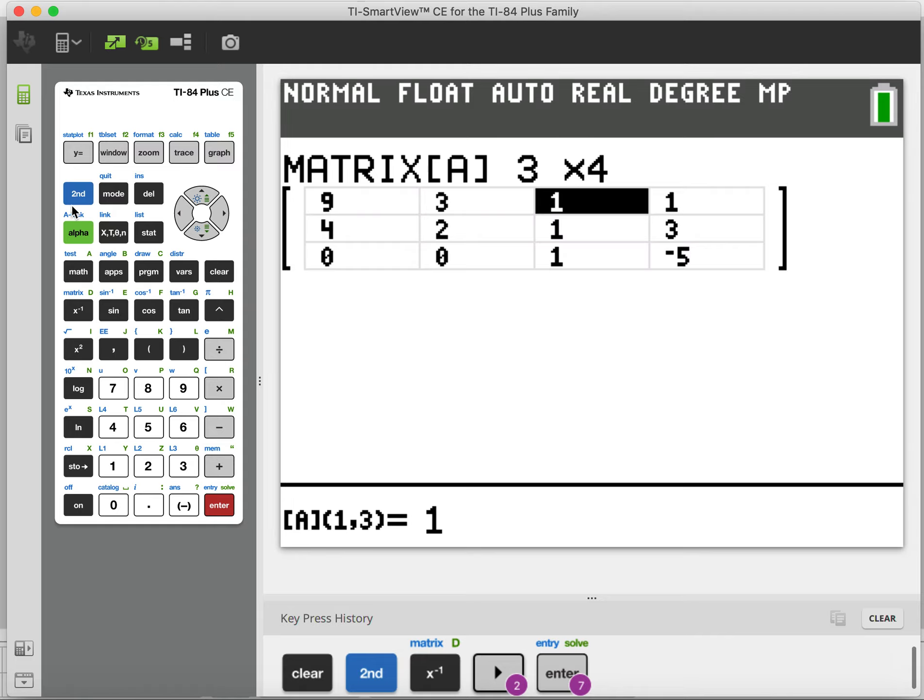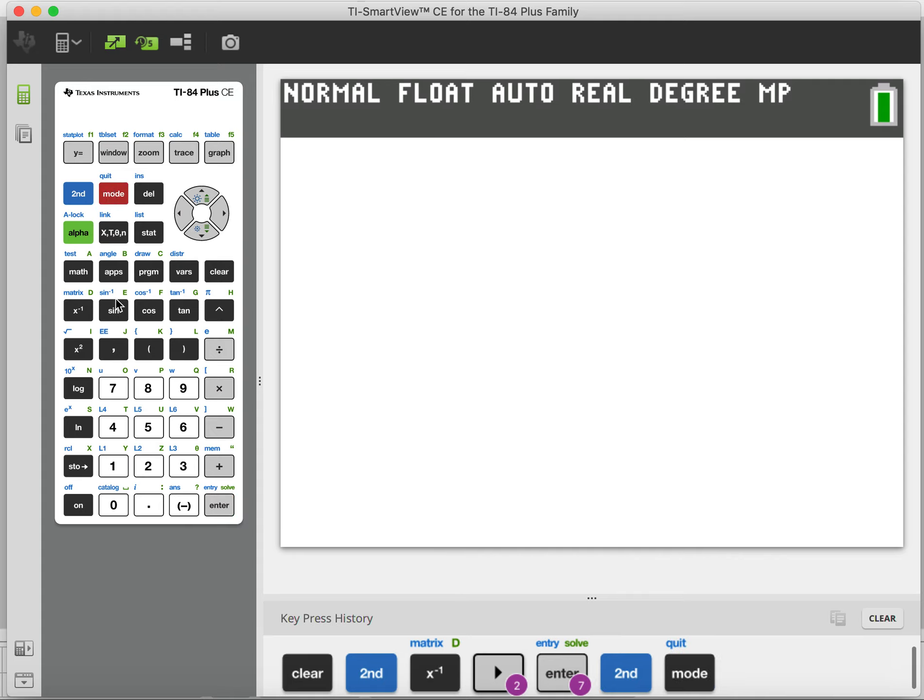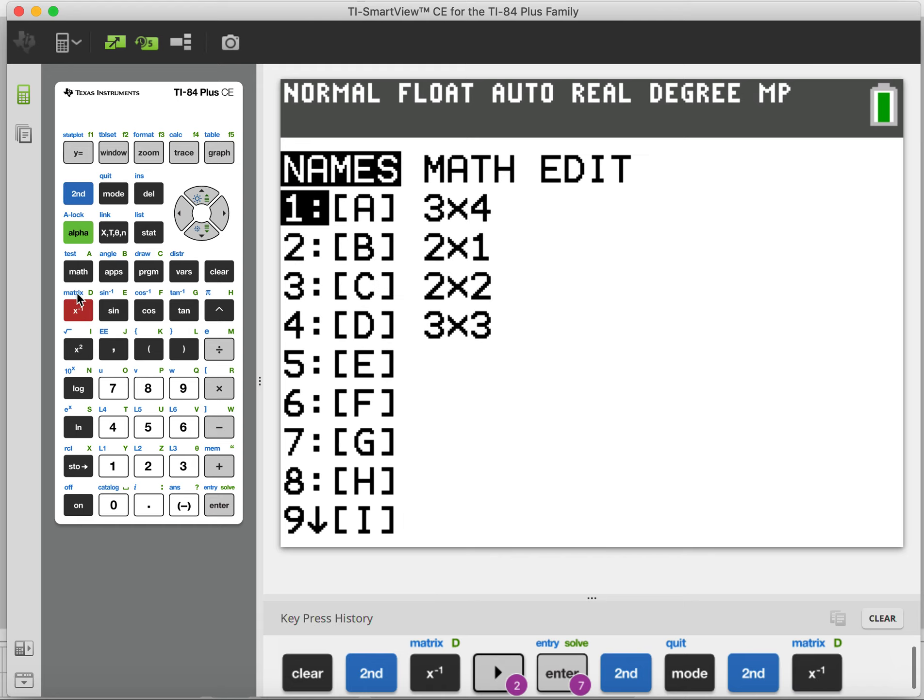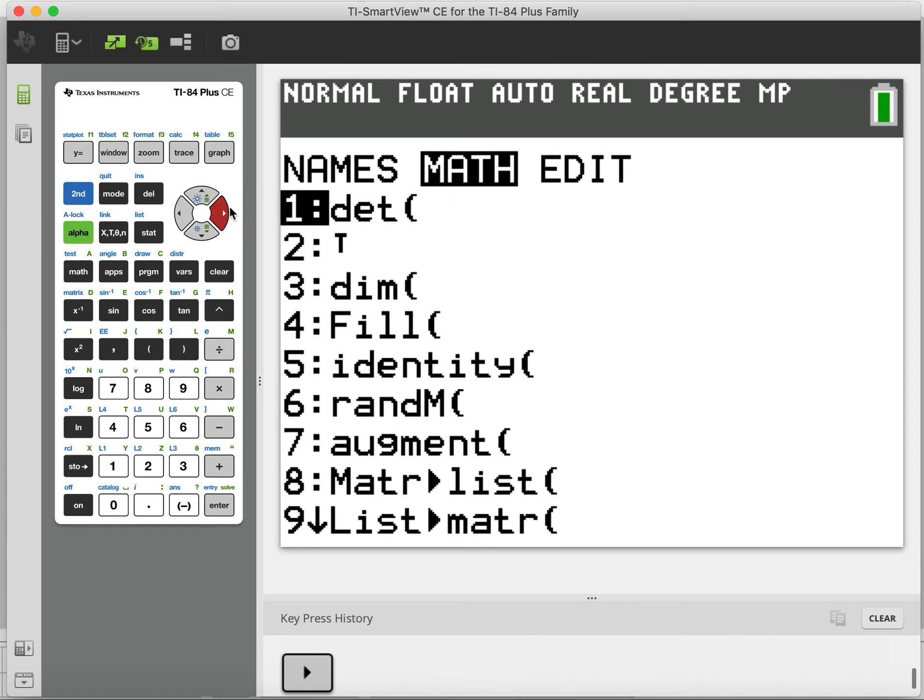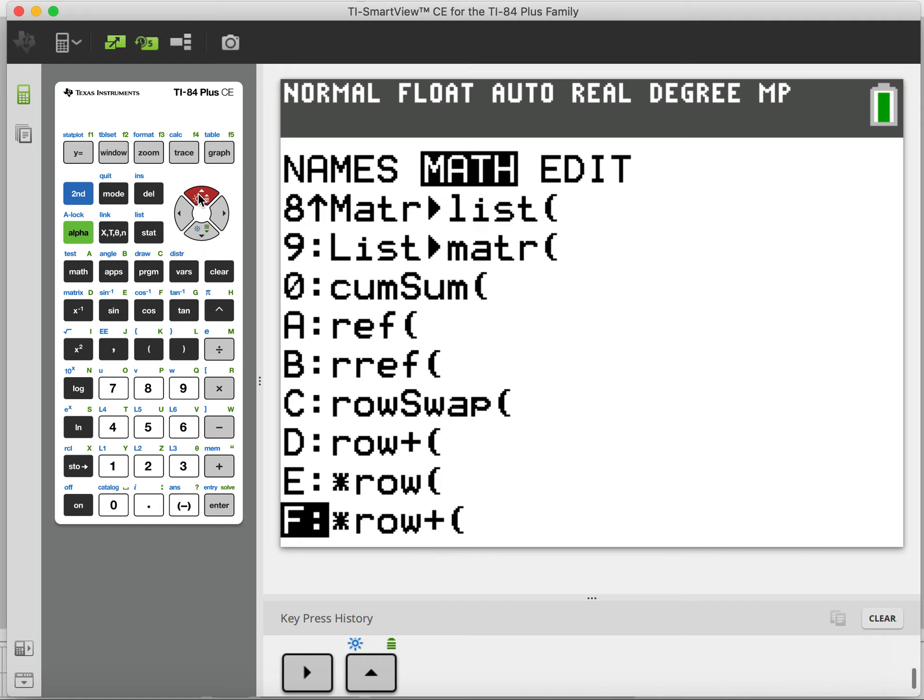Now that you've done that, let's go ahead and get out of here. The way we get out is we go second quit. Then I'm going to go back to my matrix. So second matrix. And do you guys remember where to find RREF or reduced row echelon form? You need to go over to math. Down. It's like very far at the bottom. So you could arrow all the way down, or you can arrow up. It takes you to the bottom of the list and find RREF.